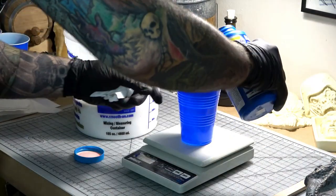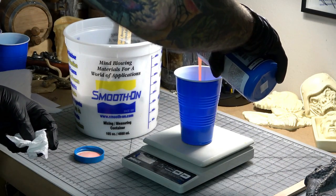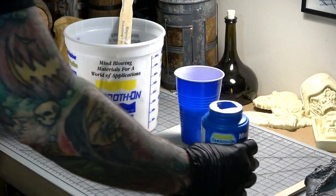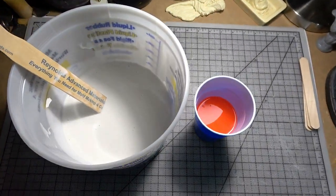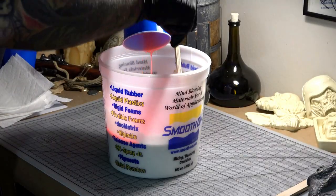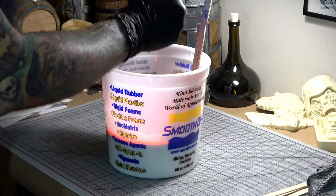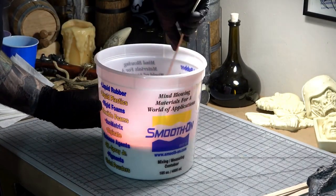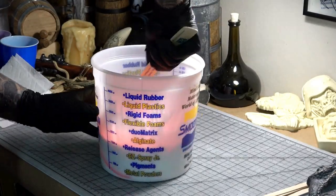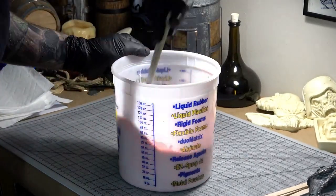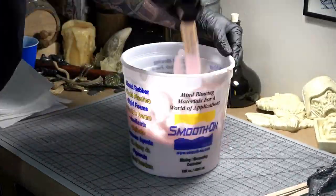Now pour part B into part A and use a tongue depressor to really scrape it all out. Then you are going to stir the heck out of it for about three to five minutes, really scraping the sides, the bottom, and aggressively stirring until the two parts are perfectly blended together.